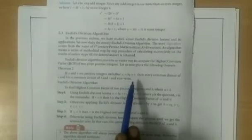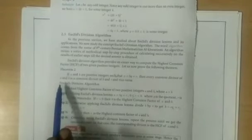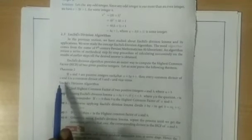If a and b are positive integers and a equal to bq plus r, then every common divisor of a and b